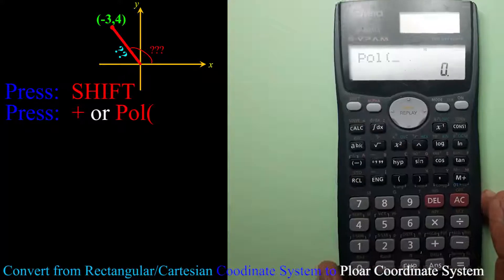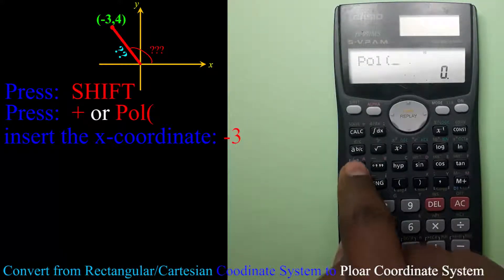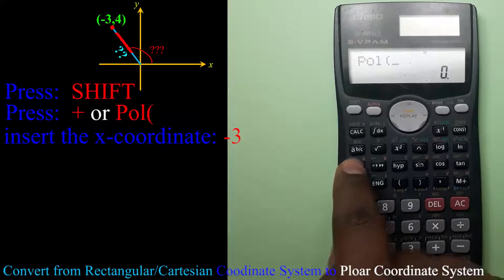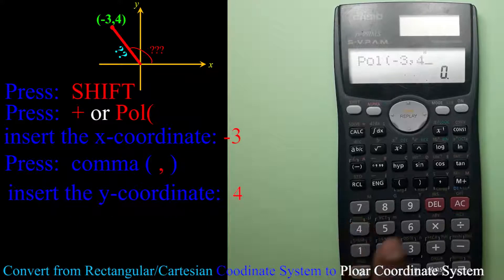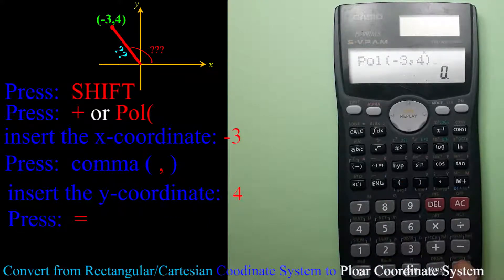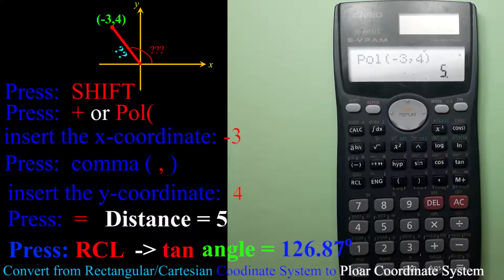Then I will enter X component negative 3, comma, the Y component 4, then I will close the bracket, then I will say equal to. It gives me 5.